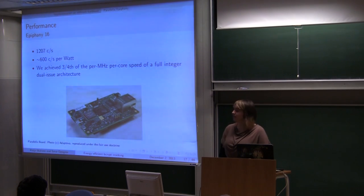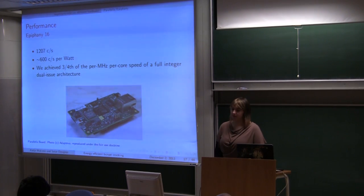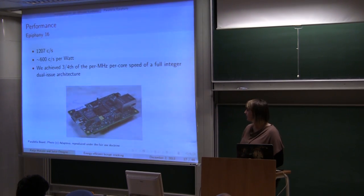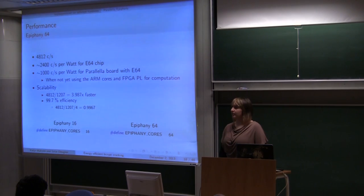But even though Epiphany is very Bcrypt friendly, its problem is that the FPU can only issue two types of instructions that we actually needed. But nevertheless we achieved a very good performance when compared to full integer dual-issue architecture. On Epiphany 64 the performances are almost four times bigger than Epiphany 16. So we have excellent scalability with 99.7% efficiency.